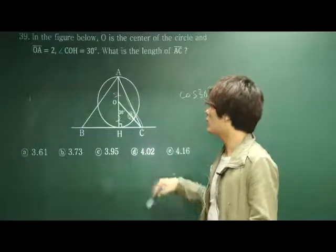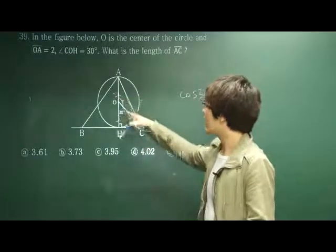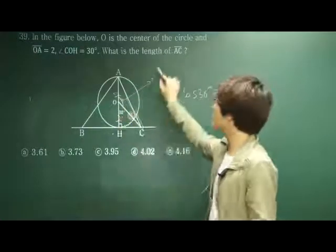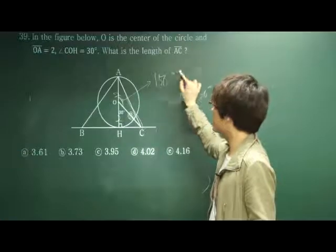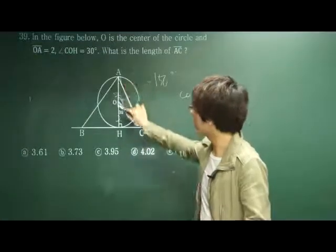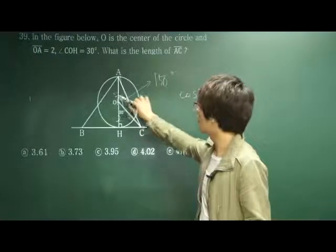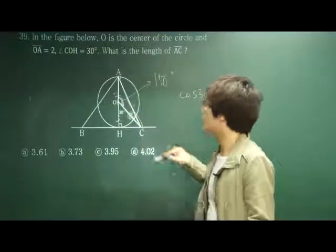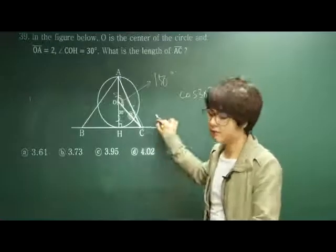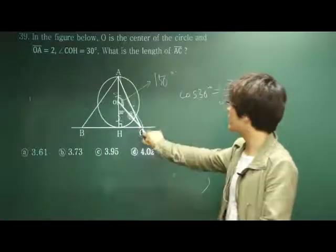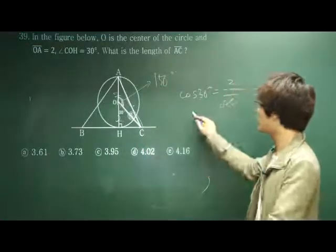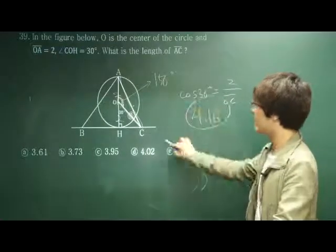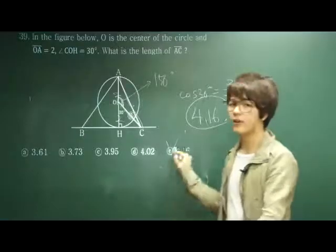And then what can we use? Since the angle here is 180 minus 30, which is 150 degrees, now we know this length and this length, and the angle in between. Use the law of cosines here again, and then find out the length of AC, which will be equal to 4.16. E will be our correct answer. Verify this.